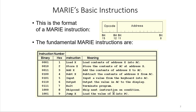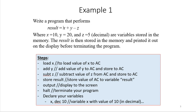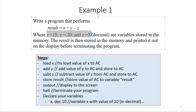We're going to show a very simple example: performing the calculation X plus Y minus Z and storing the result in a result variable. X, Y, and Z are three variables stored in memory, with X equals 10, Y equals 20, and Z equals 5. We calculate X plus Y minus Z, store the value to a result variable, and then display the result on the monitor.